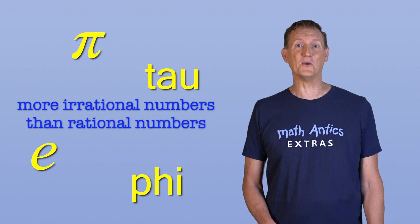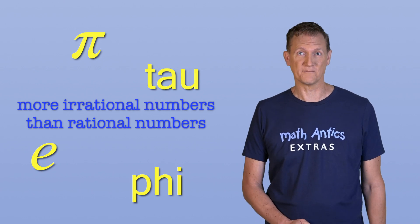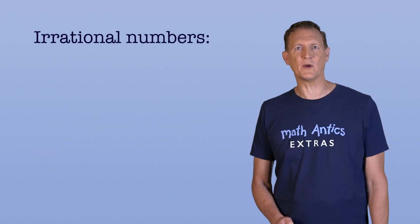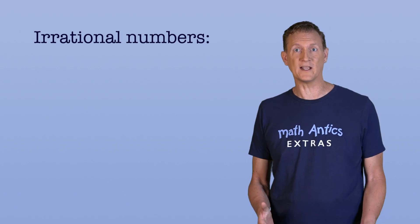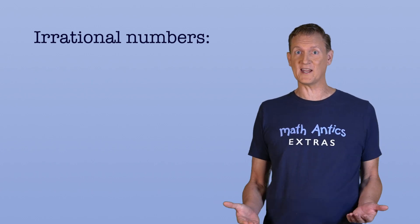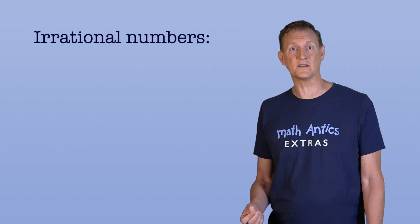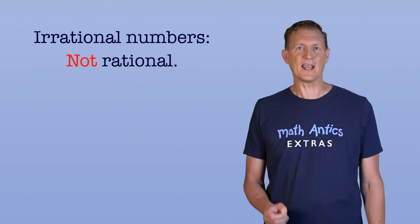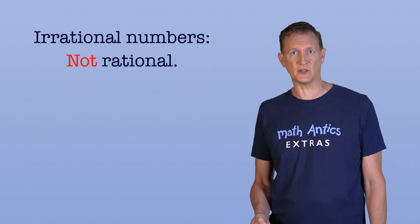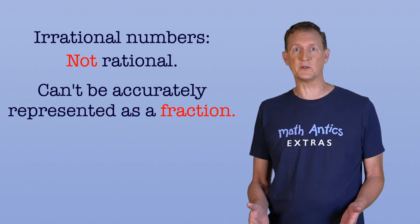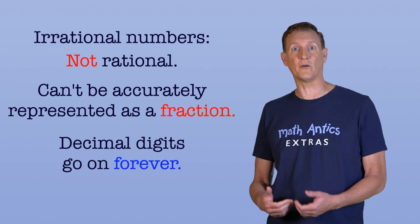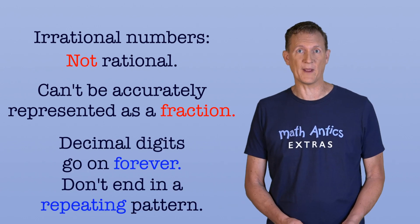I don't know about you, but I find that amazing. Alright, hopefully you now understand irrational numbers a bit better. And you realize they aren't called irrational because they're insane. They're called irrational because they are not rational. They can't be represented as a ratio of two integers, so they can't be accurately represented as a fraction. And their decimal digits go on forever and don't end in a repeating pattern.